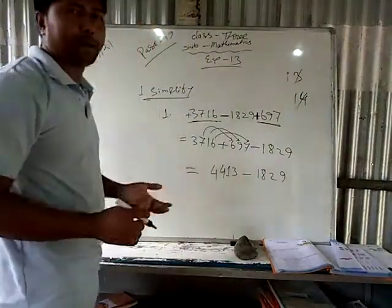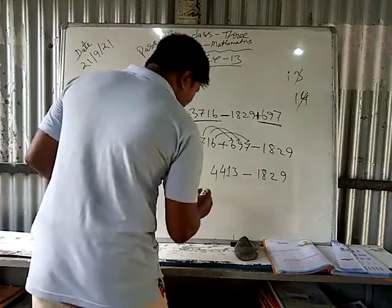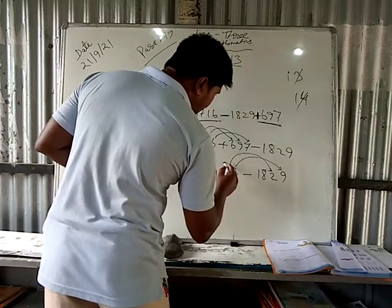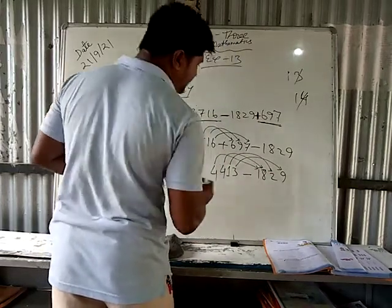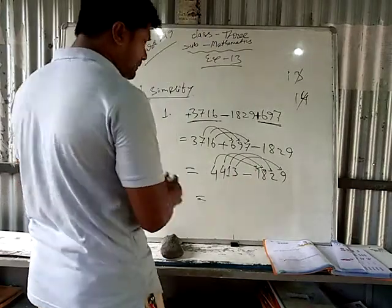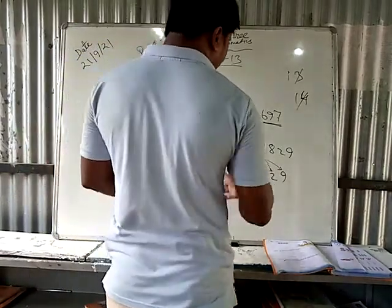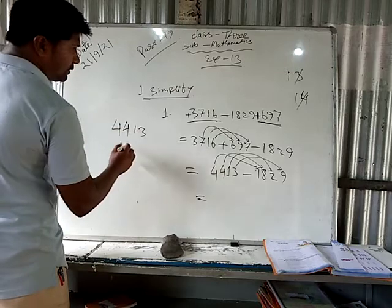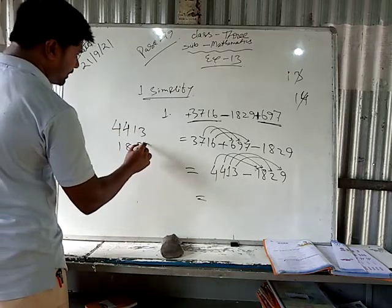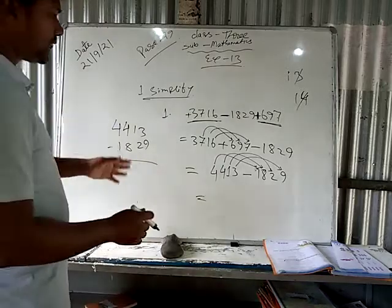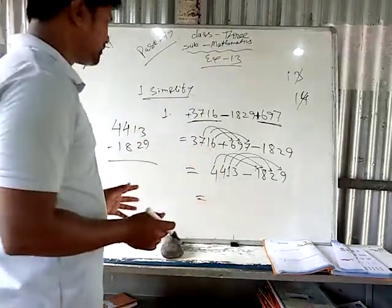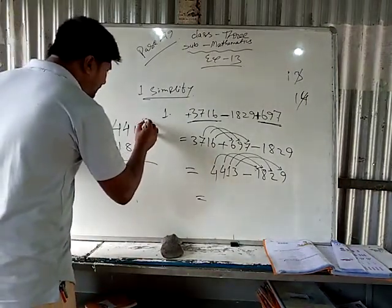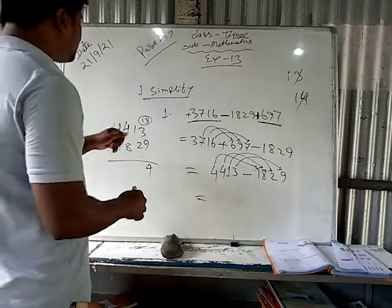To subtract, units to units, tens to tens, hundreds to hundreds, thousands to thousands. Now in the ones place, three minus nine is not possible. So we borrow: three becomes 13, and 13 minus 9 is 4. We write 4 here. In the tens place, we have given one, so zero is there. Zero minus two is not possible, so we borrow.